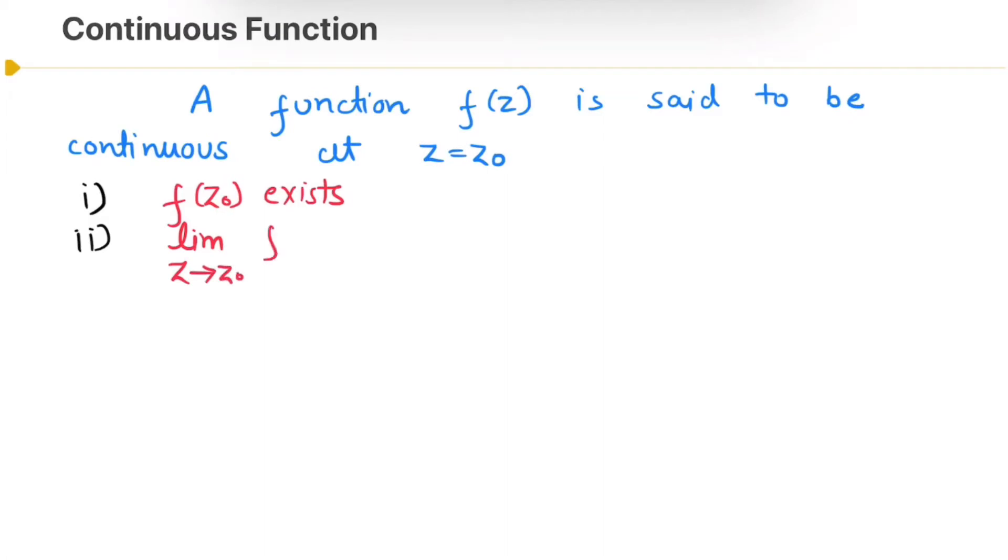That is, limit z tending towards z₀ f(z) should be equal to f(z₀). So this is the basic definition of the continuous function.